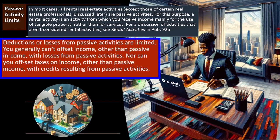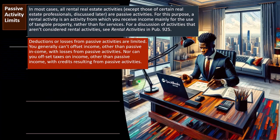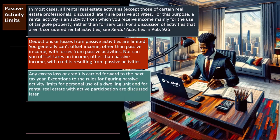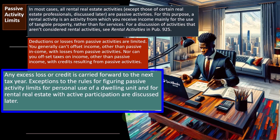Deductions or losses from passive activities are limited. You generally can't offset income other than passive income with losses from passive activities. That's the general rule — if it's declared passive, that income is in its own lane and you can't net losses against other income. If you have passive income, the IRS takes their share. But passive losses stay in their own lane. Any excess loss or credit is carried forward to the next year when it can be applied against passive income.